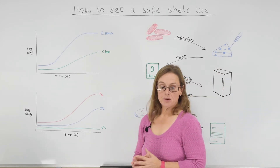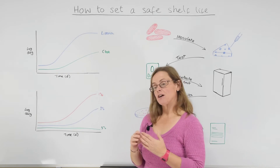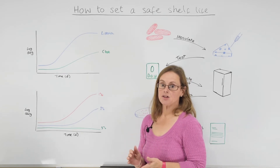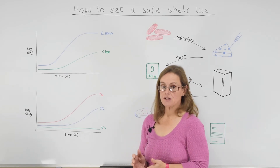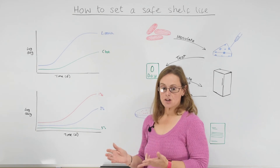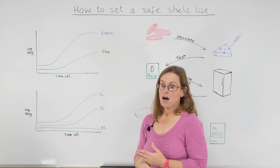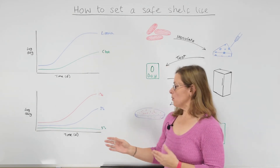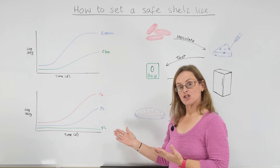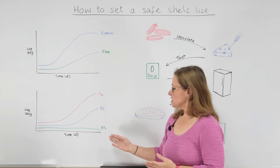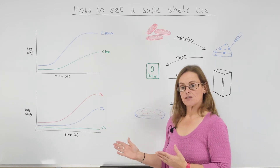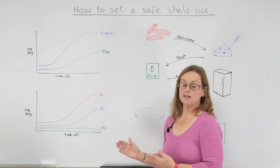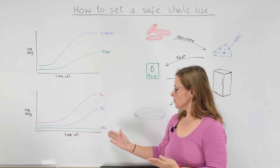What you can also do is look at a similar product where you might have changed pH, water activity slightly, storage temperature might have changed - maybe lower, maybe higher - or you might have changed salt. So if you have changed any characteristics of the product you can then have a look and see how that would affect growth.